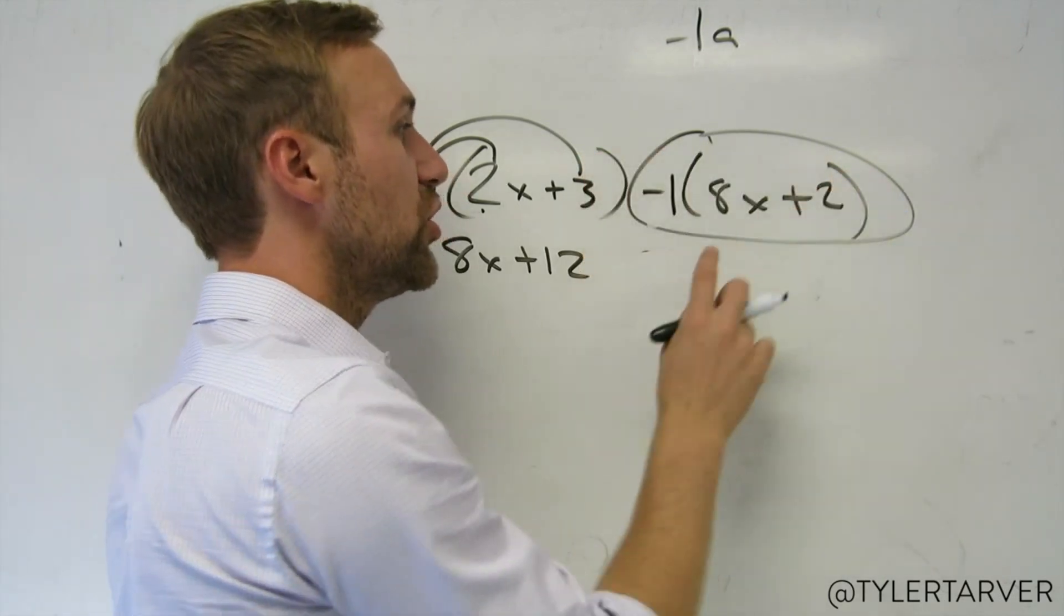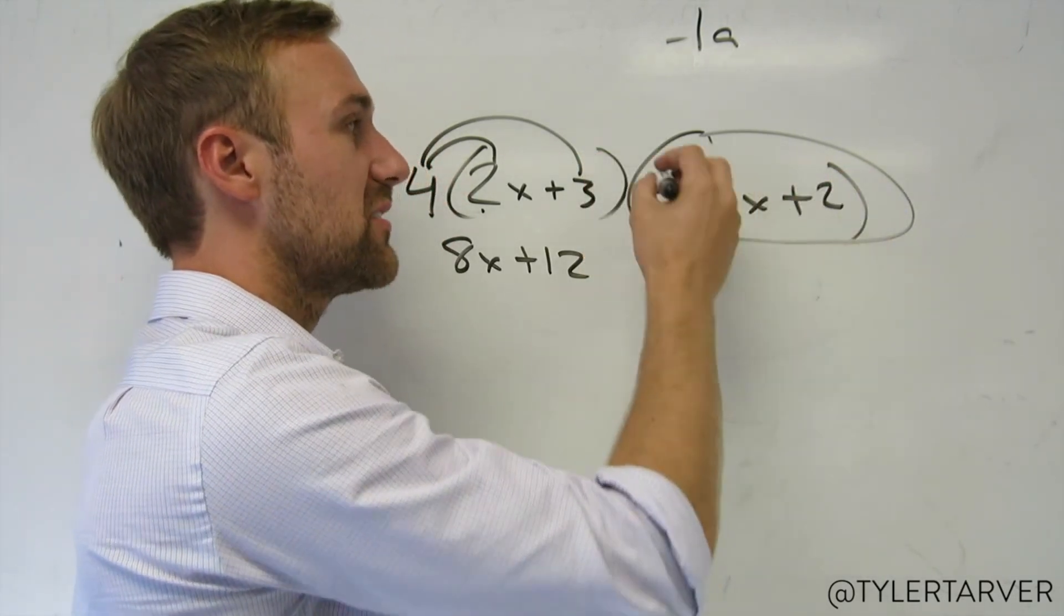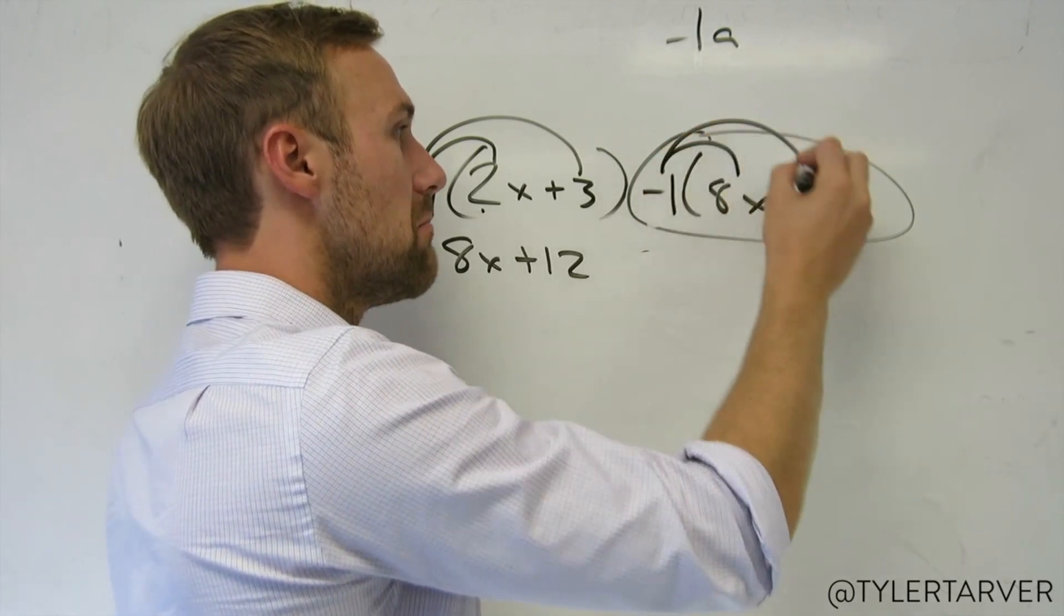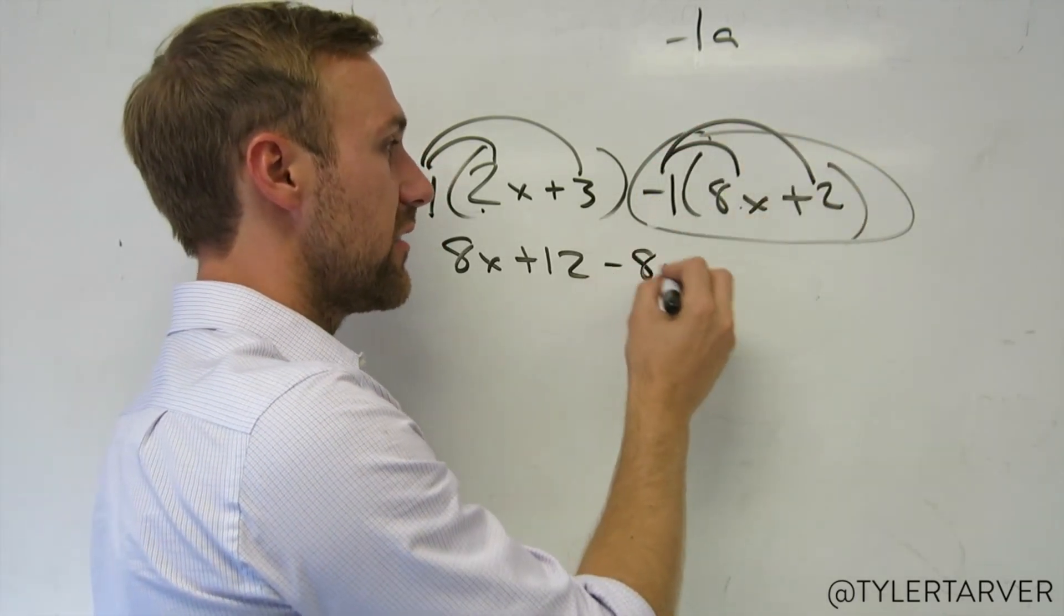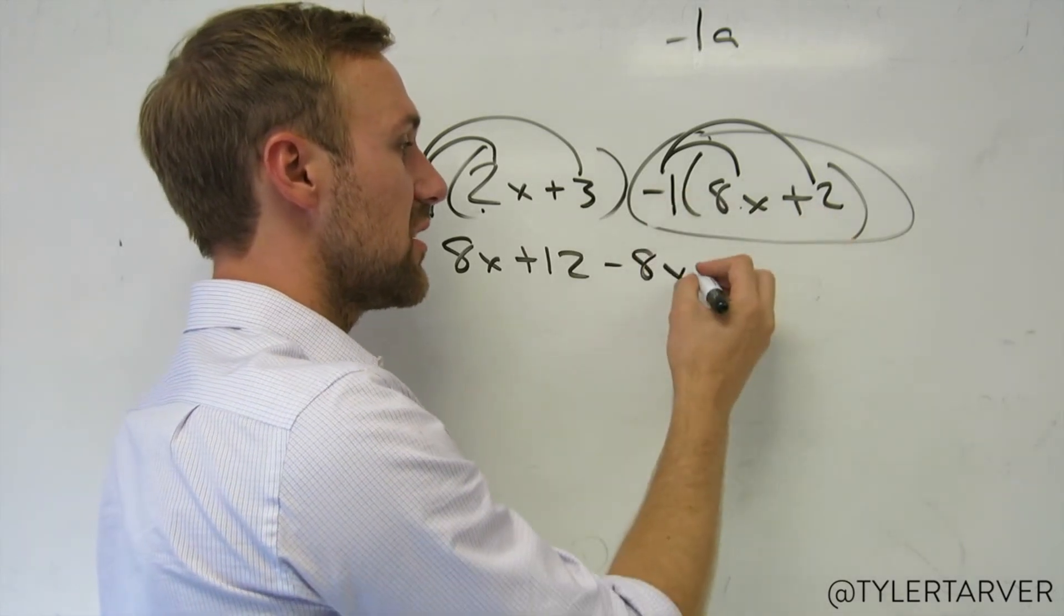So what you do is you have to distribute that negative 1 to every term inside here. Negative 1 times 8x is negative 8x. Negative 1 times positive 2 is negative 2.